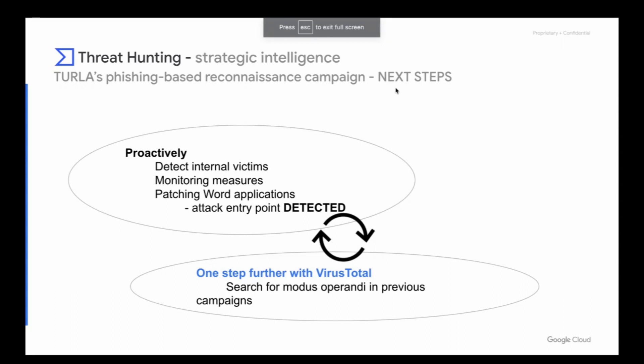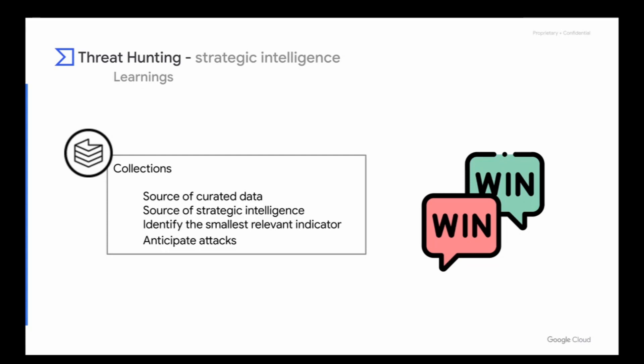As for learnings, I would like to highlight the importance of collections as a source of curated data and strategic intelligence. In normal VT, you only have one single file related to the campaign along with many unrelated files. This file's relationship graph is not extensive enough to identify its association to a government-targeted campaign. However, collections offer additional insights to identify the smallest relevant spot that can reveal an entire campaign with incredible value. Through the strategic intelligence it offers, you can even learn how to anticipate attacks.